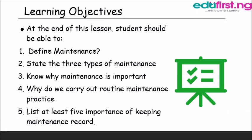Before we move on, let's quickly look at the learning objectives. At the end of this lesson, students should be able to: 1. Define maintenance. 2. State the three types of maintenance. 3. Know why maintenance is important. 4. Know why we carry out routine maintenance practice. 5. List at least five importance of keeping maintenance records.